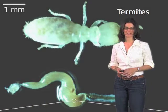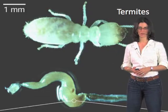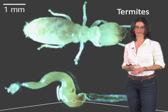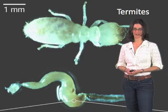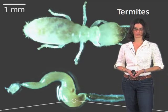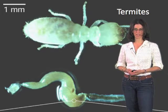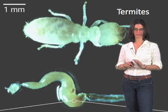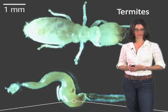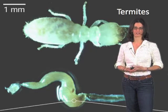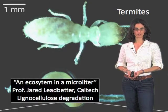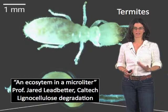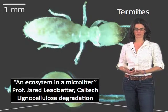Crawling around in not only soil environments, but of course we're very familiar with these from our homes, are termites. The termites are a terrific source of microbial diversity, and one that's becoming an increasingly important microenvironment to look at because of our desire to understand microbial processes that might be harnessed for lignocellulose degradation, out of a need to develop alternative sources of energy.